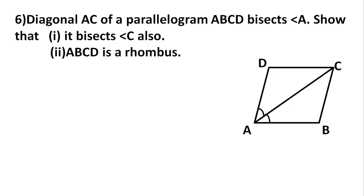Hi students, today we are going to study Class 9 Chapter 8 Quadrilaterals, Exercise 8.1, Questions 6 and 7. We are discussing two questions. Let's discuss the first one — Question 6. The question is: diagonal AC of a parallelogram ABCD bisects angle A. Show that it bisects angle C also. The second part: ABCD is a rhombus.